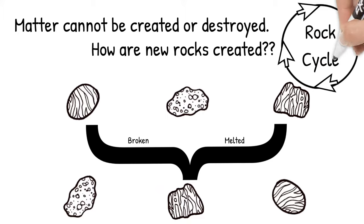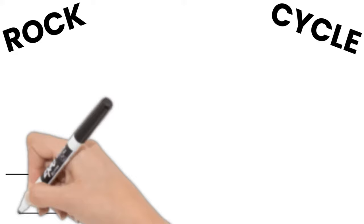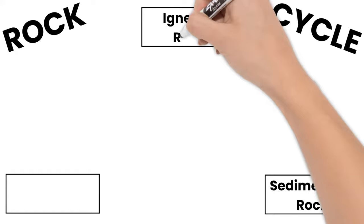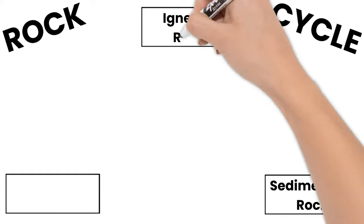I like to draw out the rock cycle to better visualize it. Let's start with our three rock types: sedimentary rock, igneous rock, and metamorphic rock. I'm also going to add magma and sediments as in-between stopping points, and I like to start with these in-between ones when drawing out the rock cycle.